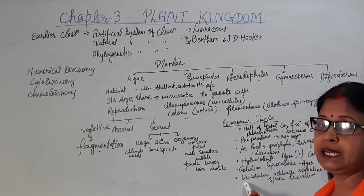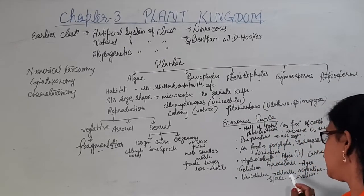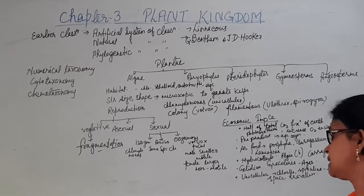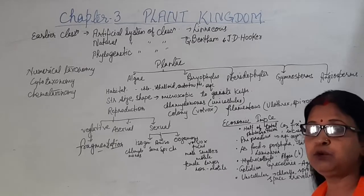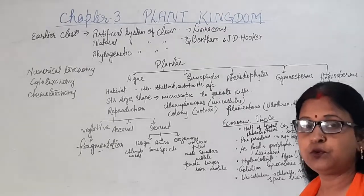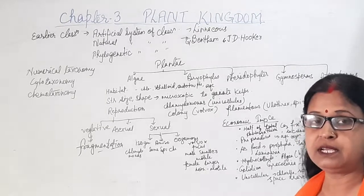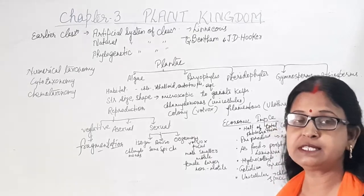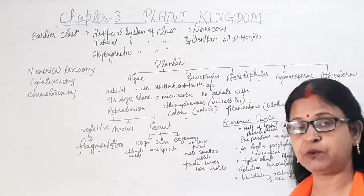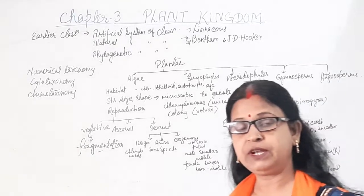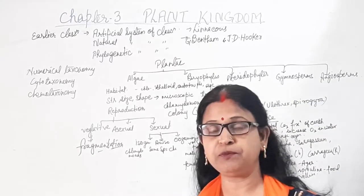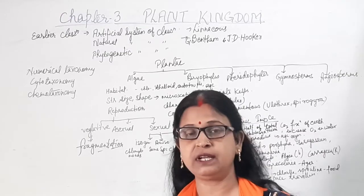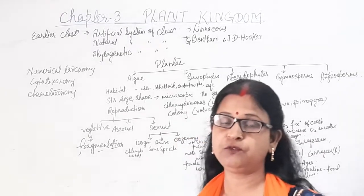Some unicellular algae like Chlorella and Spirulina are used as food by space travelers because they are very rich in protein.